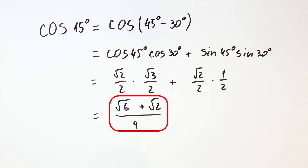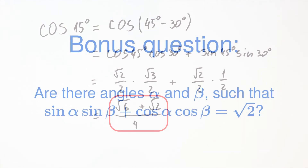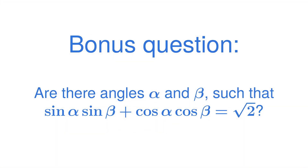With that in mind, I leave you with this question: Are there angles alpha and beta such that the sine of alpha times the sine of beta plus the cosine of alpha times the cosine of beta is equal to the square root of 2?